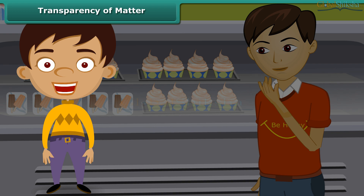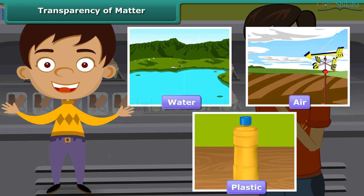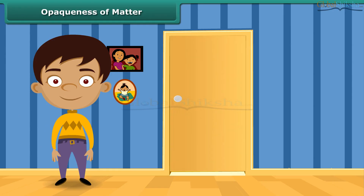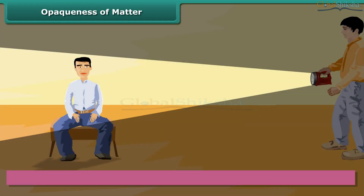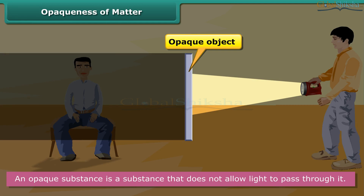Other examples of transparent substances are water, air, and plastic. Can you see what is happening in a closed room? No — because the walls and doors of the room are opaque. An opaque substance is a substance that does not allow light to pass through it; it is impenetrable by light. It does not absorb light; instead, it reflects light back. Hence, we cannot see things through an opaque substance.